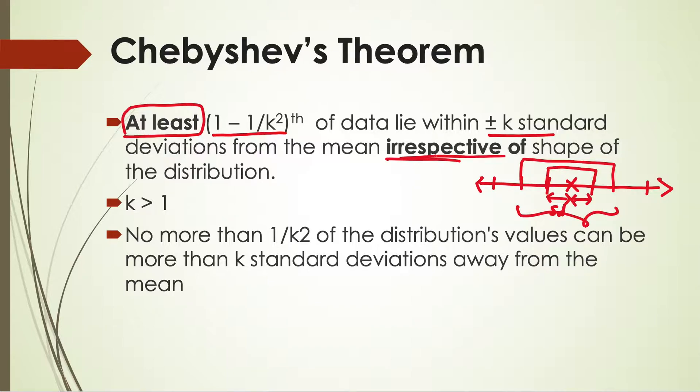This is important because there are certain other rules which are linked to some distribution, like if we have a normal distribution or bell shape distribution, then we have some rule like within plus minus 1 standard deviation, 68% of the data will lie, within plus minus 2 standard deviations, roughly 95% of the data will lie. But this theorem is irrespective of that shape.